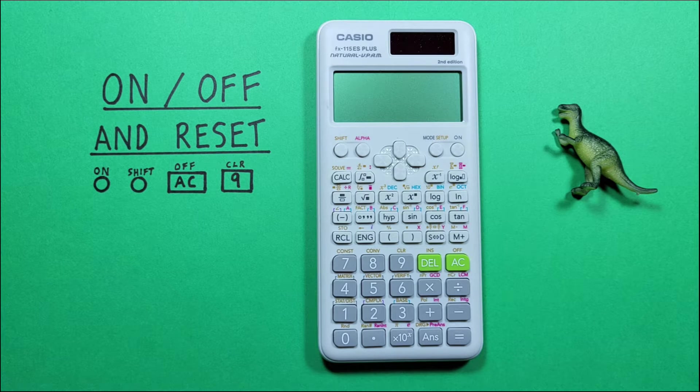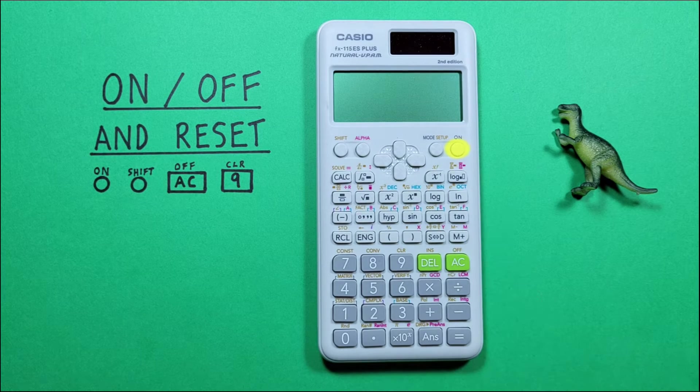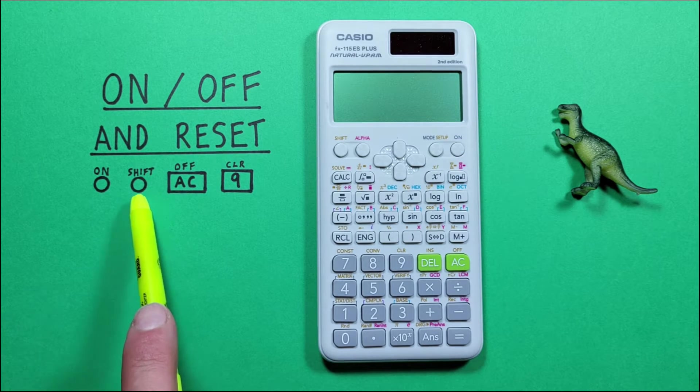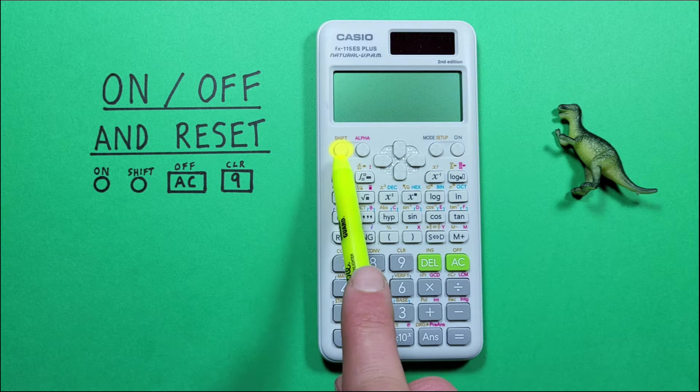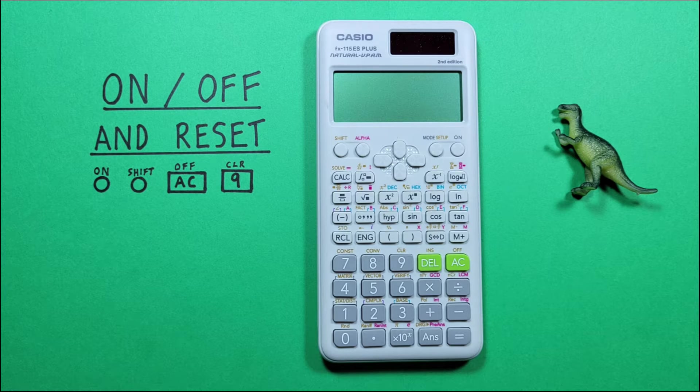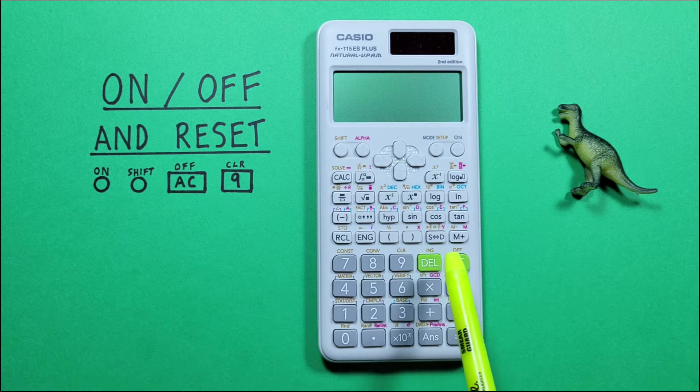To do that we'll use the ON key that looks like this, located here, the SHIFT key that looks like this, located here, and the AC key or clear key with the SHIFT function of OFF that looks like this, located here.